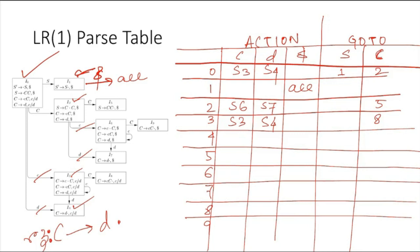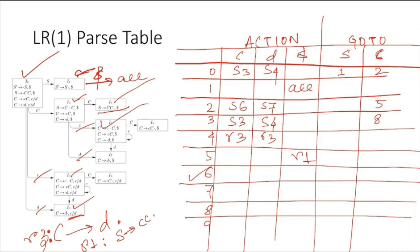We write R3 in the look-ahead positions, which are c and d, so we write R3 in both those columns. Then we go to state I5, where we also have a reduction: S → CC dot, which is rule one — R1. Since the look-ahead here is dollar, we place R1 in the dollar column.